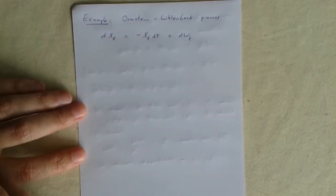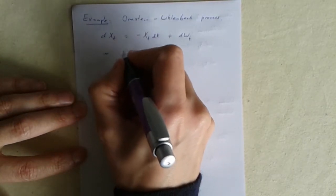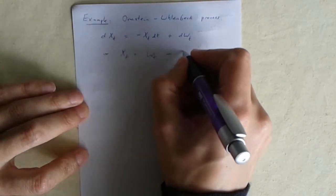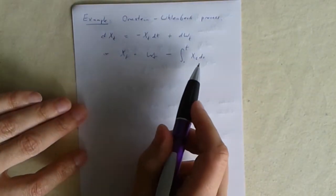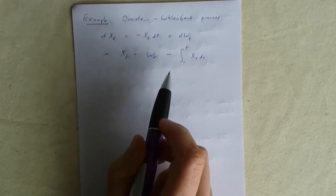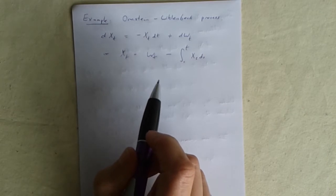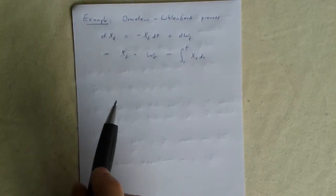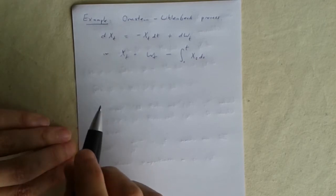This is very much not a martingale because its drift is not zero. But let's see if we can make it a martingale by changing the probability measure. Another way to write this process would be with the integrals. Xt would be Wt minus the integral like that. Of course this is still not an explicit formula that tells you what Xt is, it's just an equation that it satisfies but we'll need that in a minute.